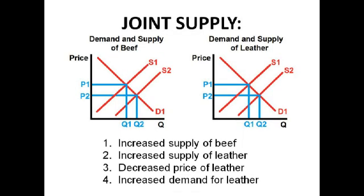Joint supply refers to two goods that are supplied together. For example, a cow: if you want to supply beef from a cow, you'll also get leather. If the supply of beef increases because there are more cows, there will be an increased supply of leather. This means there'll be a fall in the price of leather because there'll be excess supply, which means the price falls so that demand can match.